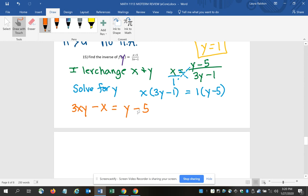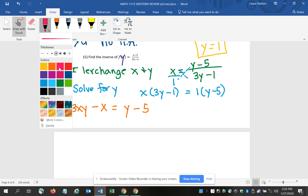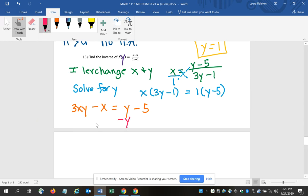I'm going to distribute so that I have 3xy minus 1x equals y minus 5. I'm ultimately trying to get y by itself, but since I have y's on both sides, I need to try to get them together on one side. So I'm going to minus the y first. So I have 3xy minus y minus x equals negative 5.